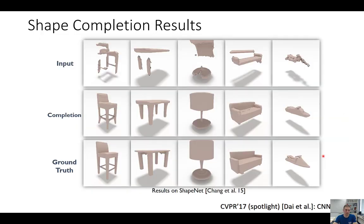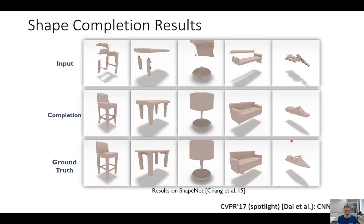Looking at these reconstruction results, we have the respective partial input, the completions, and the ground truth. This is done on ShapeNet on a per-object basis. You can see these reconstructions look pretty decent — we're getting quite good completion results. This was one of the first proof-of-concept works we did at this point: yes, you can train generic models. There was nothing fancy — no GAN, no autoregressive network.